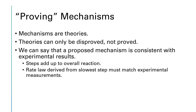Can we ever prove a mechanism? Unfortunately, the answer is no. Mechanisms are theories, and theories can only be disproved by data, not proved. The best we can say is that a proposed mechanism is consistent with our experimentally determined results. There are two big criteria for this: first, the steps in our mechanism must add up to give our overall reaction; and second, the rate law derived from the slowest step in the mechanism must match our experimental measurements.